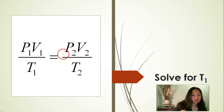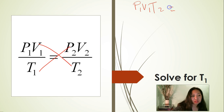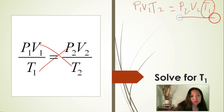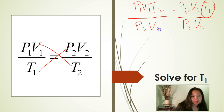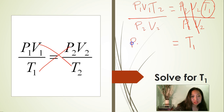Now solve for T1. First thing we need to do is cross multiply. P1 times V1 times T2 is equal to P2 times V2 times T1. Divide both sides of the equation by P2 times V2 to isolate T1. Cancel P2, cancel V2. That leaves us with the initial temperature formula: P1 times V1 times T2 divided by P2 times V2.